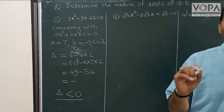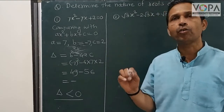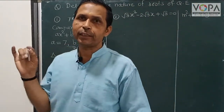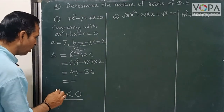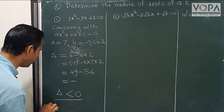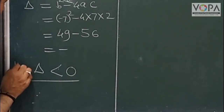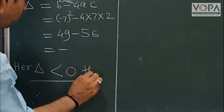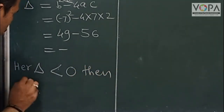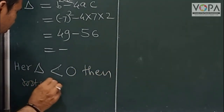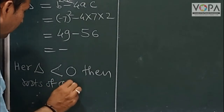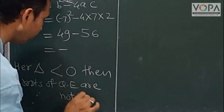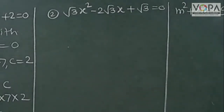Our conclusion is: the roots of the quadratic equation are not real. This is our conclusion. Here delta is less than zero, then the roots of the quadratic equation are not real.